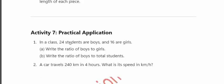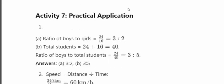In a class, 24 students are boys and 16 are girls. Write the ratio of boys to girls: 24 is to 16, which simplifies to 3 is to 2. Total students: 24 plus 16 equals 40. Ratio of boys to total students: 24 is to 40, that is 3 is to 5.